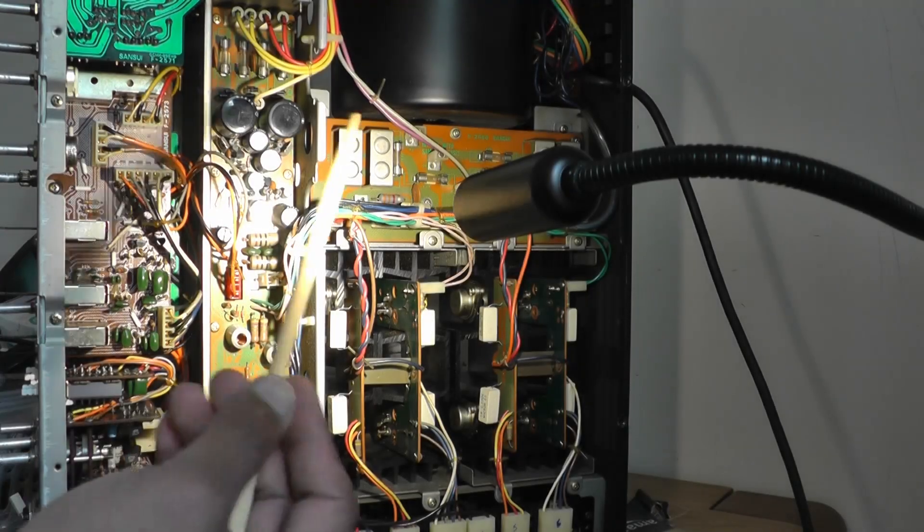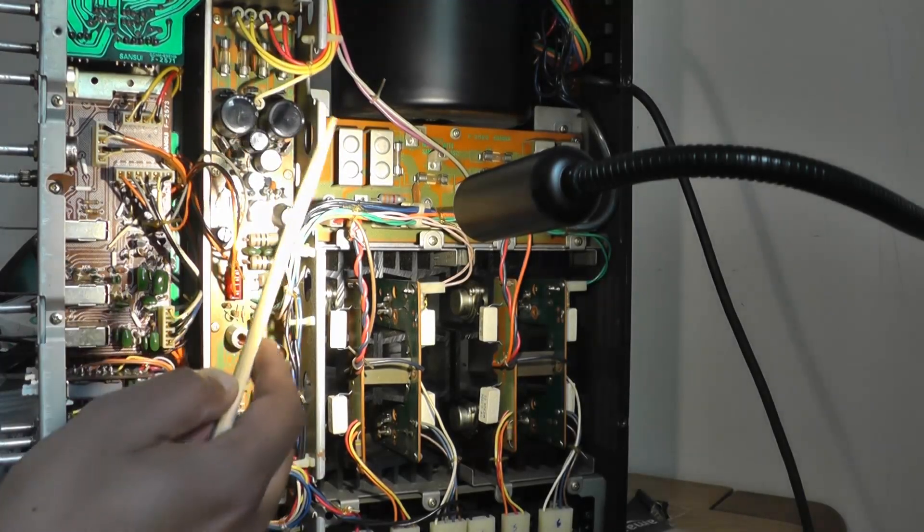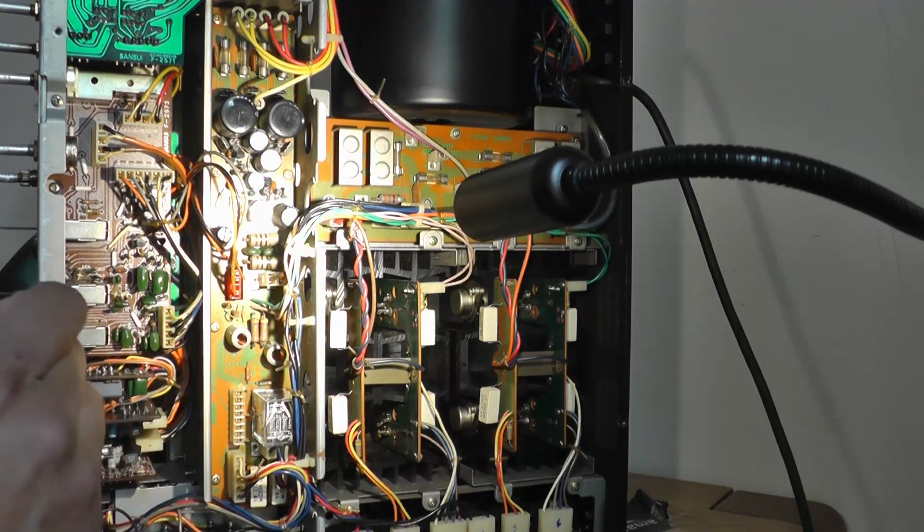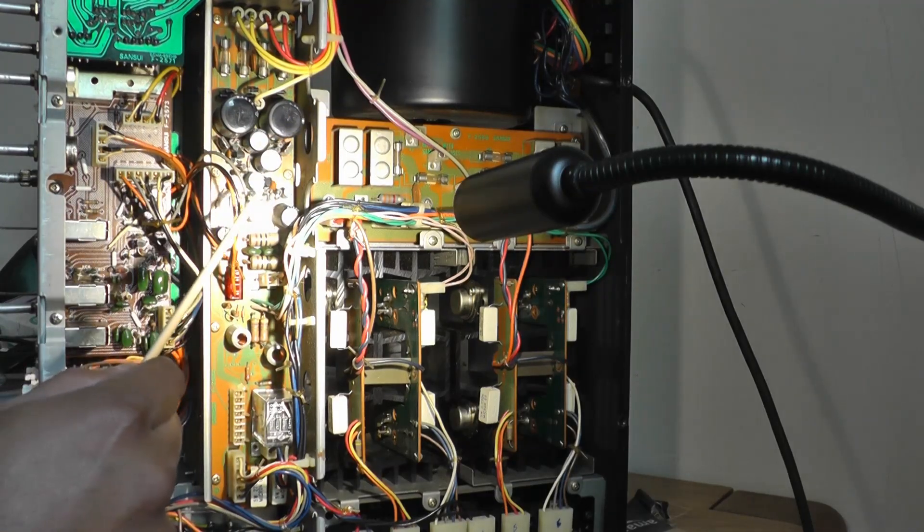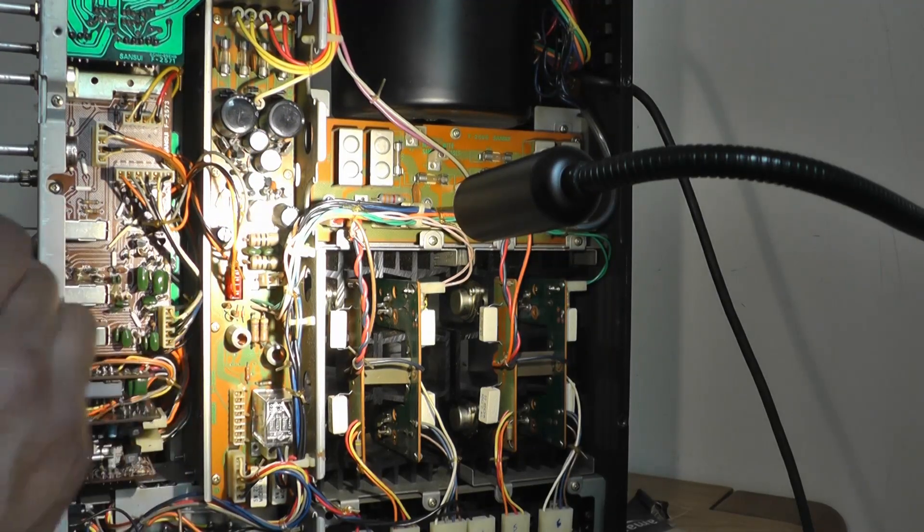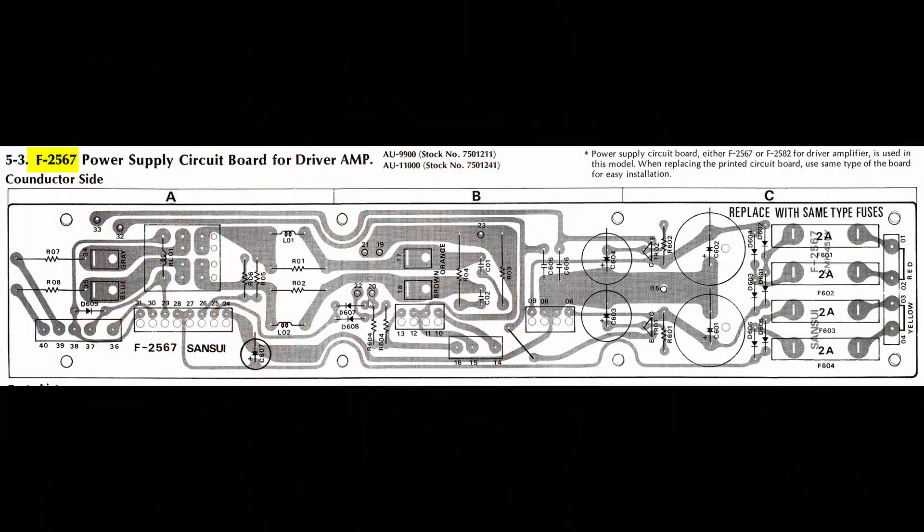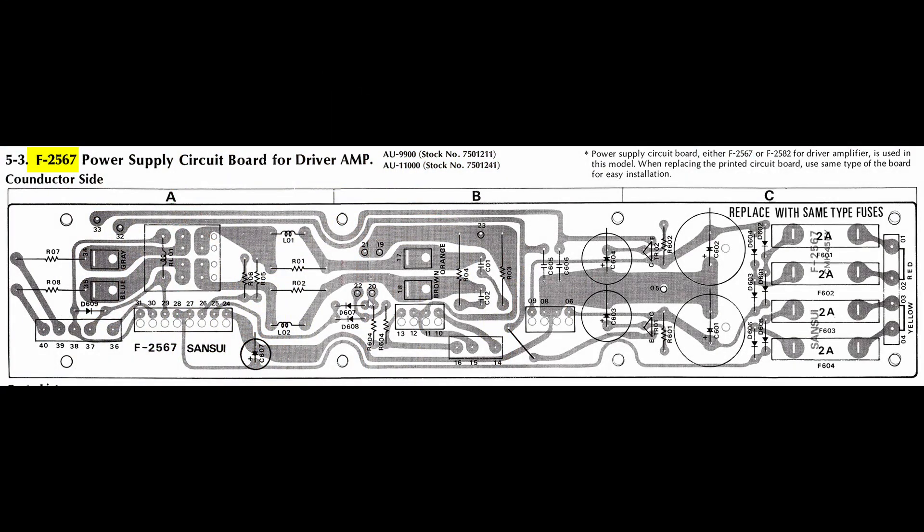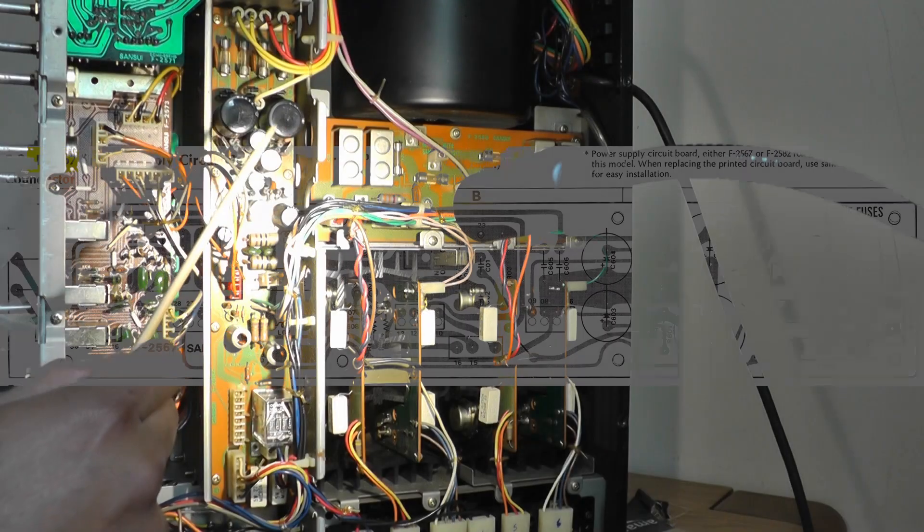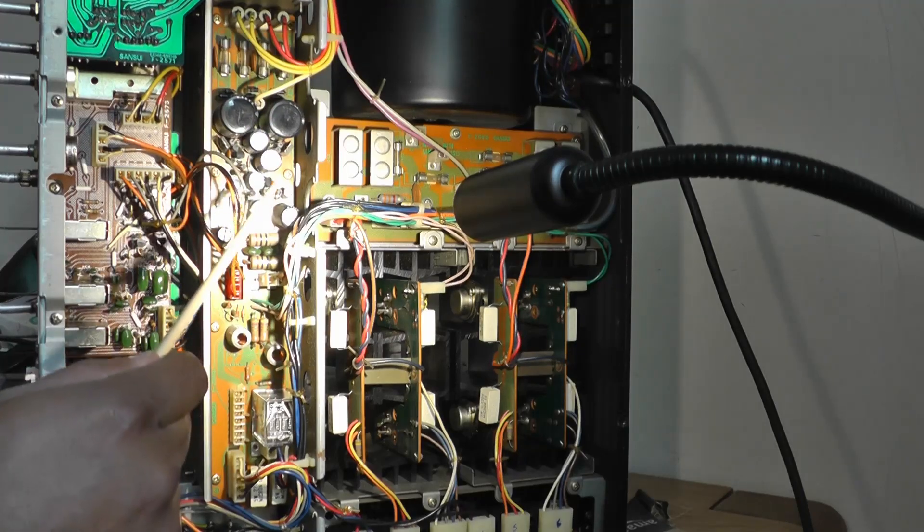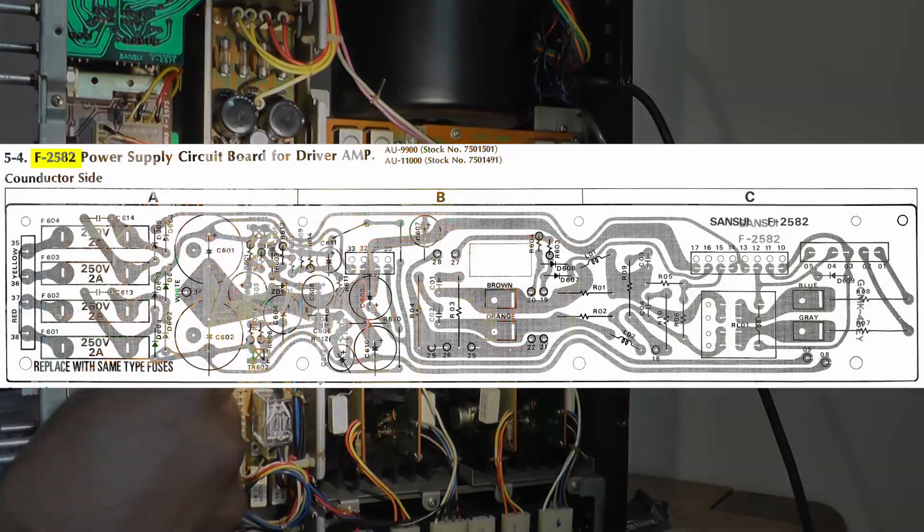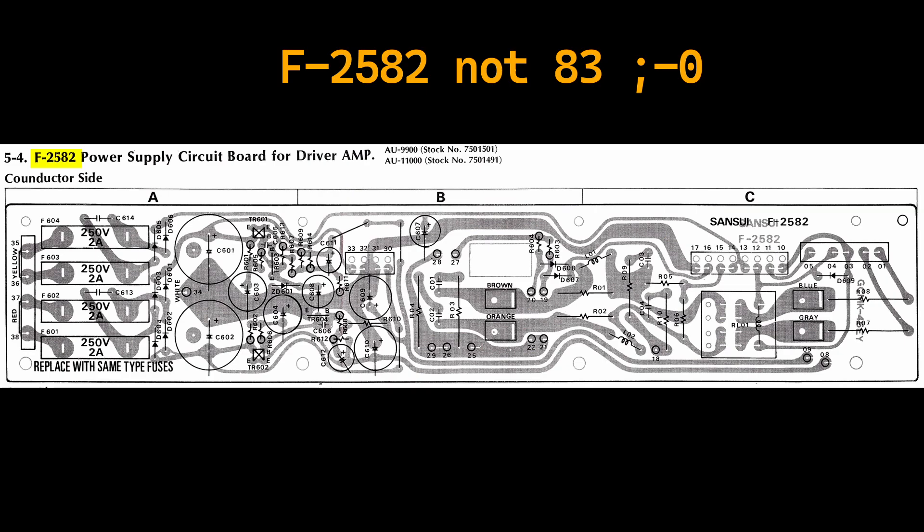Okay, power supply for driver amp. There are different variations of this board. For instance, models built in 1975 have the F25-67 board. I believe the model were built after 76, like mine here, called the F25-83, which I believe the latest. But anyway, let's crack on.